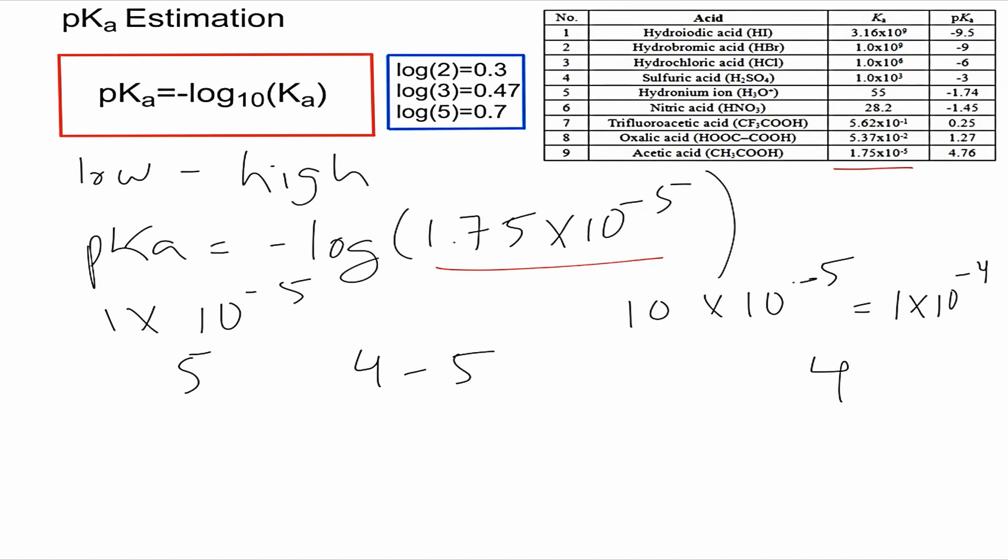You look at the value of your actual Ka, which is 1.75 times 10 to the negative 5, and comparing that to the ranges, it's much closer to 1 times 10 to the negative 5 than to 10 times 10 to the negative 5. So it will be on the higher range, closer to 5 than to 4. Because the number is so close to 1, we can even say that our range is between 4.5 and 5.